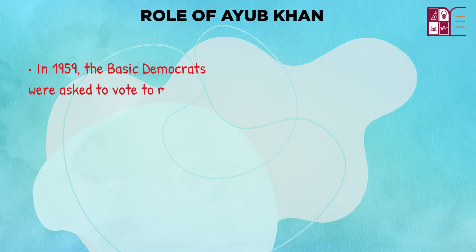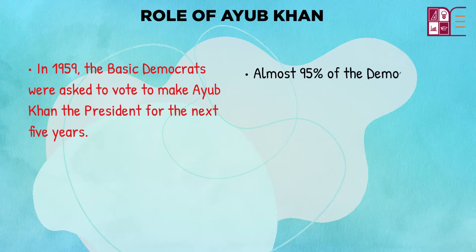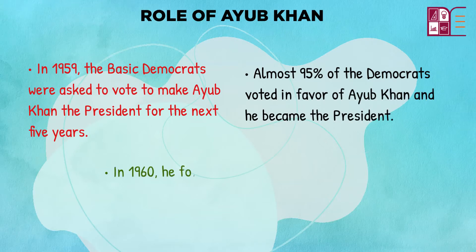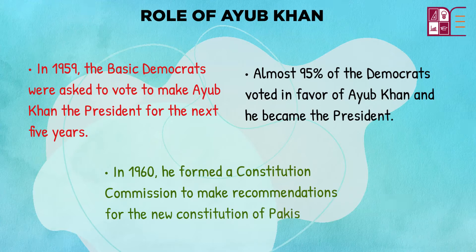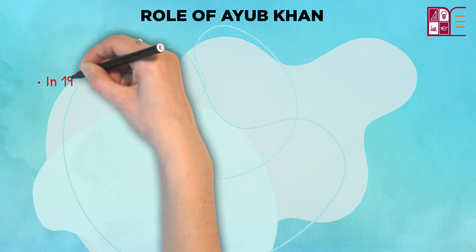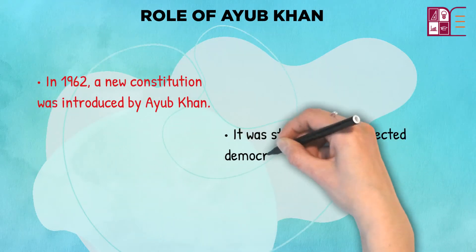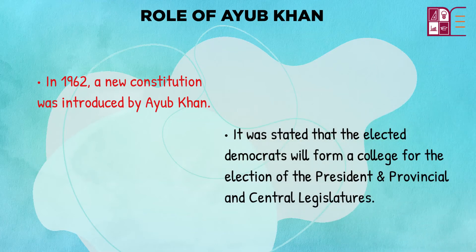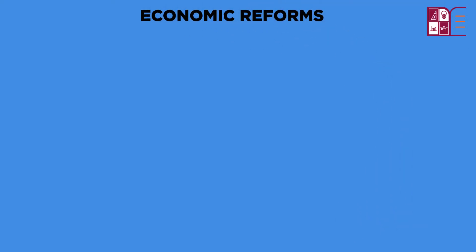In 1959, the Basic Democrats were asked to vote for confidence to make Ayub Khan the president for the next five years. Almost 95% of the Democrats voted in favor of Ayub Khan and he became the president. In 1960, he formed a constitution commission to make recommendations for the new constitution of Pakistan. In 1962, a new constitution was introduced, stating that these 80,000 elected Democrats would form a college for the election of the president as well as provincial and central legislatures.